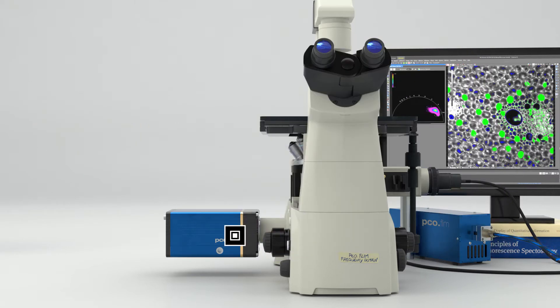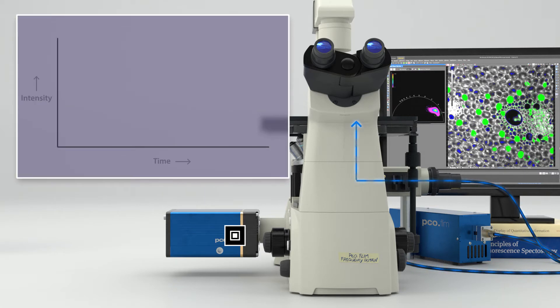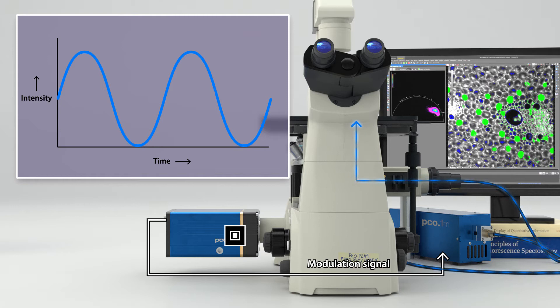In this frequency domain approach, the intensity of the excitation light is continuously modulated using sine or square waves. The modulation source is the camera, which provides modulation frequencies ranging from 5 kHz up to 40 MHz, as well as the signal for dark gating.